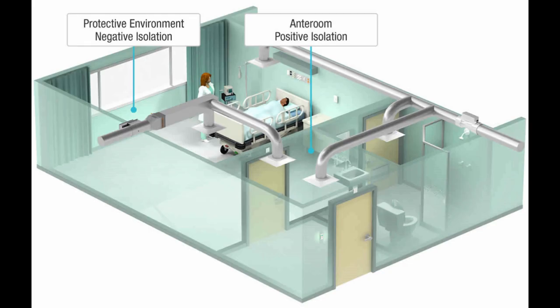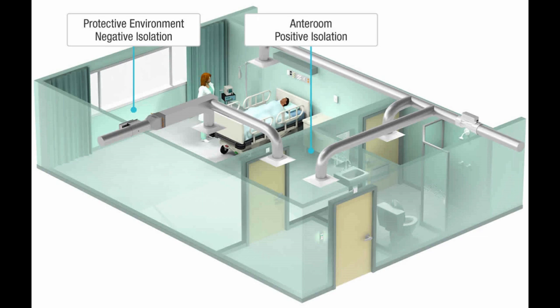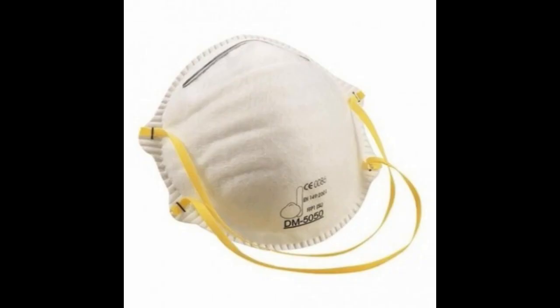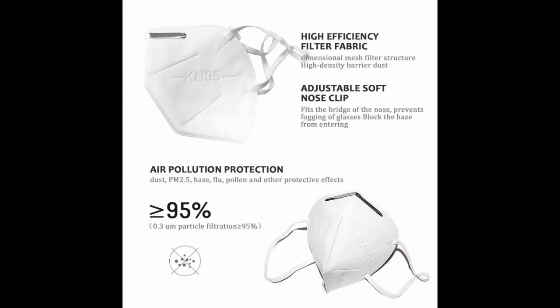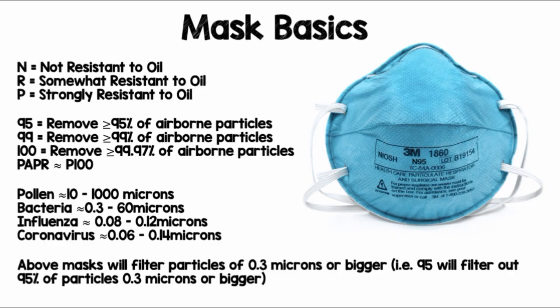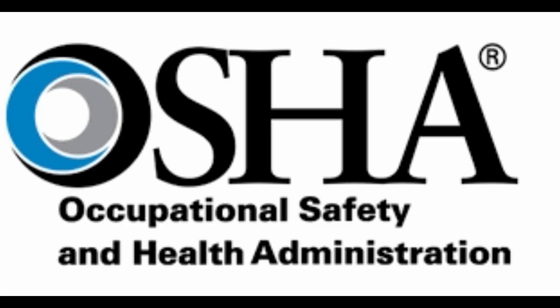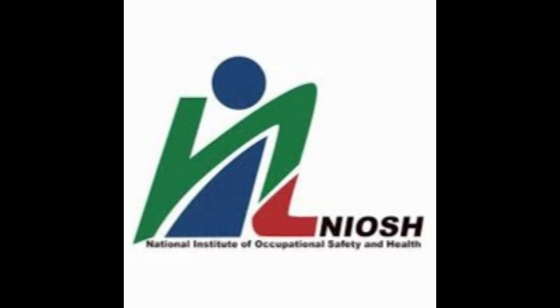For airborne precautions we also need negative pressure isolation rooms to deal with the risk of airborne infectious agents. Other mask types used include the FFP2 mask. These masks are designated and standardized by OSHA — the Occupational Safety and Health Administration — and national testing laboratories, which perform standardized testing to verify the masks perform as designed.